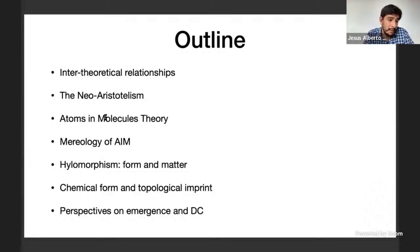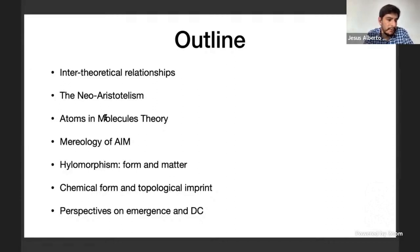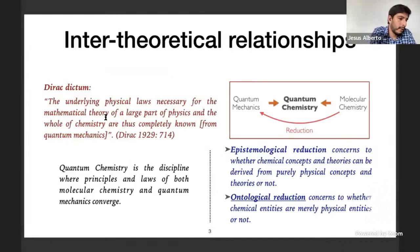Next I will explain my case study, namely the quantum theory of atoms in molecules, putting particular emphasis on the notion of topological atom. I will continue to analyze the mereological assumptions underlying QTAIM, which will lead me to propose the notion of topological imprint. Then I will introduce the Aristotelian doctrine of hylomorphism, appealing to current versions of this. After that I will explain my proposal to understand the notion of topological imprint in terms of the causal form, and finally I will point out the relationship between the emergence and downward causation debate and the hylomorphic approach.